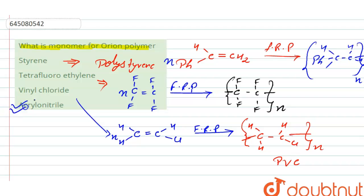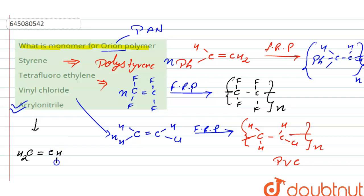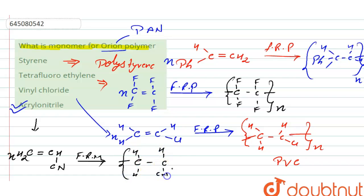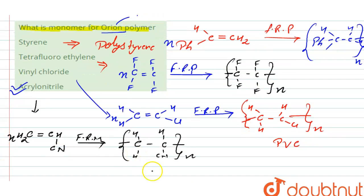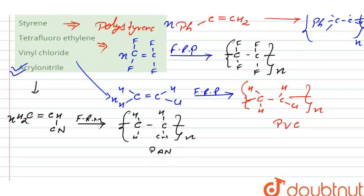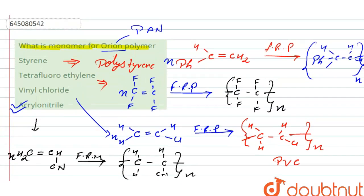In option D, we have acrylonitrile, which is the monomer of orlon polymer. Orlon is also known as PAN — polyacrylonitrile. The structure of acrylonitrile is CH₂=CH–CN. By free radical polymerization, we get the repeating unit –[CH₂–CH(CN)]ₙ–, which is polyacrylonitrile, also known as orlon. Therefore, the correct answer is option D: acrylonitrile.